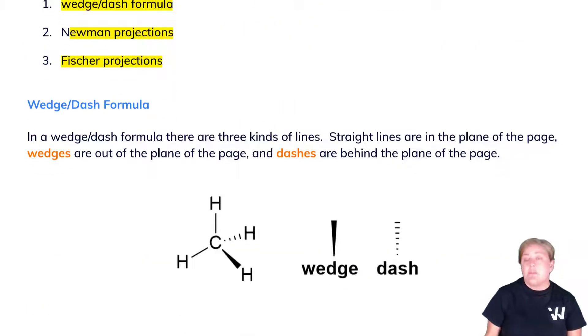In the wedge-dash formula, there are three kinds of lines. Straight lines are in the plane of the page—they're not the most informative but are important for overall structure. Then there's two types of bonds that indicate three-dimensional space occupation: the wedge, which is out of the page, and the dash, which is behind the plane of the page.